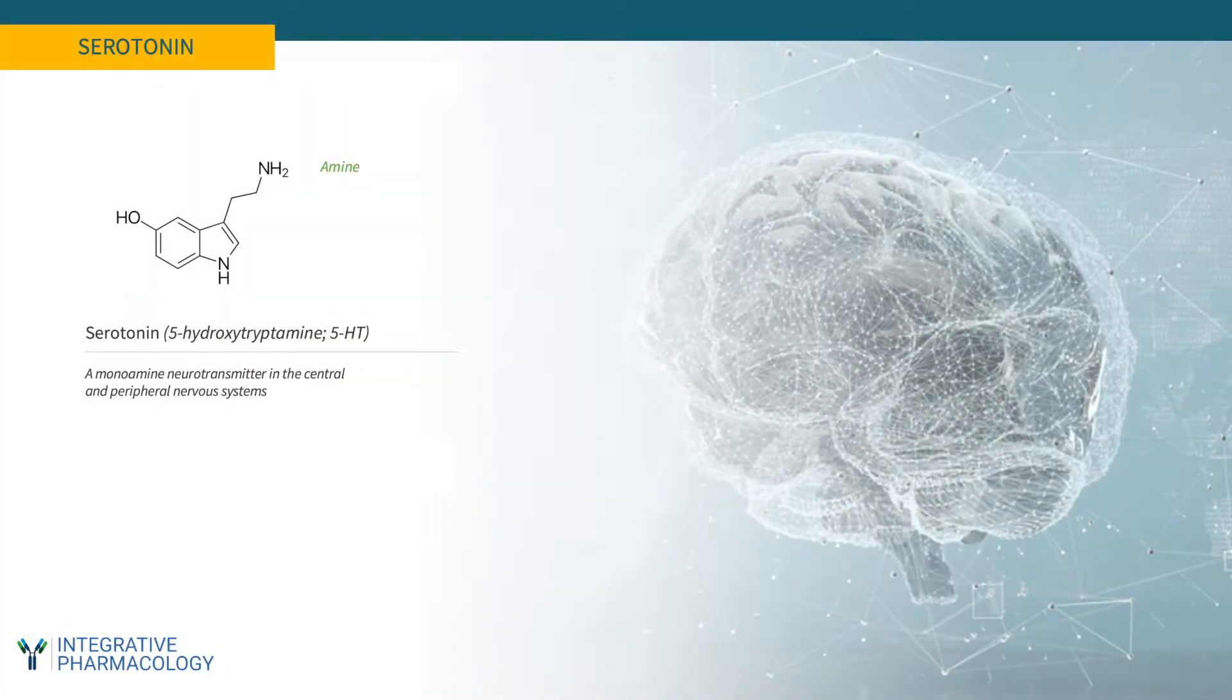Serotonin belongs to the class of neurotransmitters called monoamines, and that is because it has an amine group, just one. Serotonin is also called 5-hydroxytryptamine, or 5-HT.